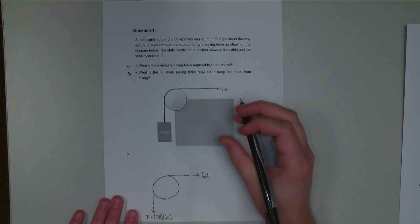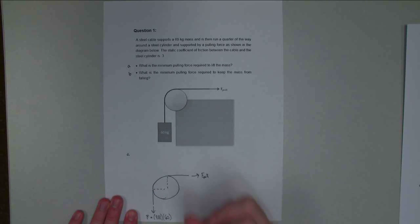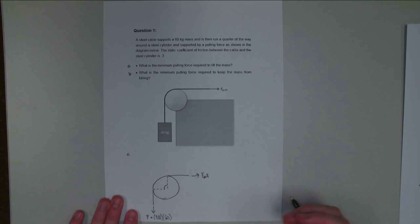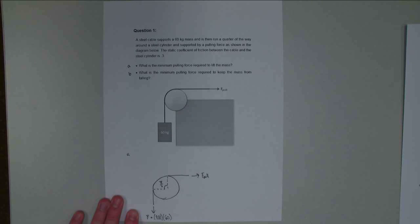Another important thing to note on our diagram is the contact angle. This contact angle is going to be a quarter of the circle, 90 degrees, or for our formulas, we're going to need to list that in radians, and that's going to be pi over 2 radians.